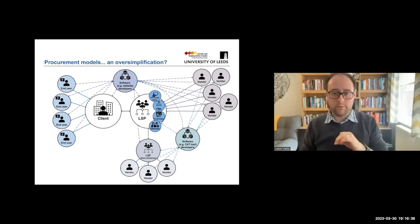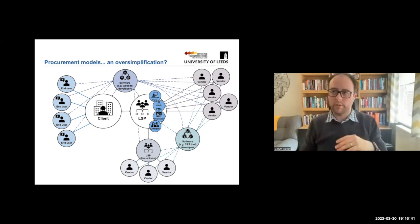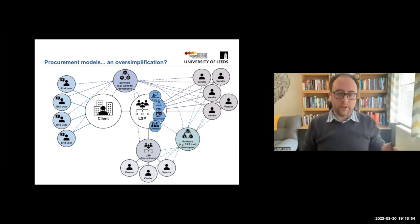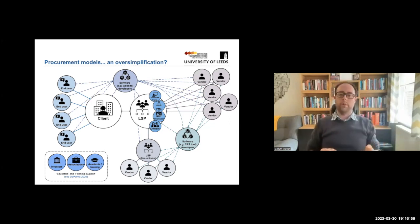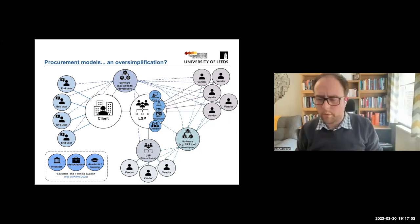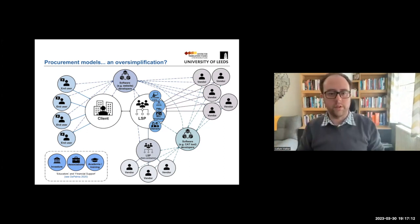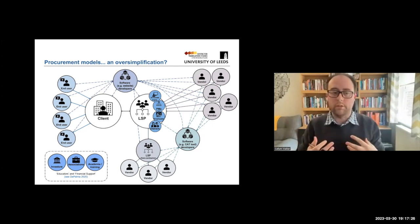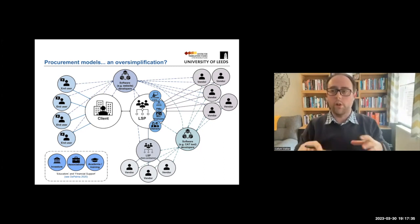Sometimes roles are blurred — RWS is a good example, having recently bought SDL: they're both an LSP and a tech company, a CAT tool developer alongside lots of other tech ventures. Outside the direct supply chain there are also other influential parties, as mentioned by Donald De Palma in a Routledge handbook chapter: investors with their own stakes in the process, industry associations advocating for freelancers or LSPs, and academia and training institutions that have a certain amount of influence over vendors and those who work in LSPs.